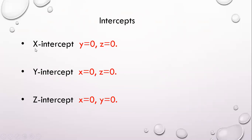The intercepts are: x-intercept, y-intercept, and z-intercept. To find the x-intercept, set y = 0 and z = 0, then solve for x. To find the y-intercept, set x = 0 and z = 0, then solve for y. To find the z-intercept, set x = 0 and y = 0, then solve for z.